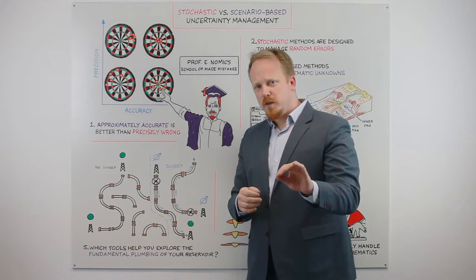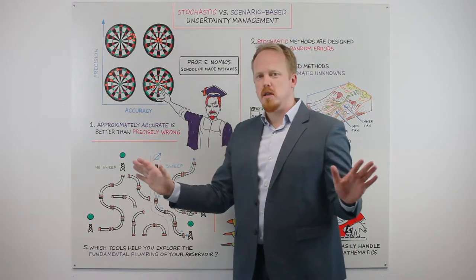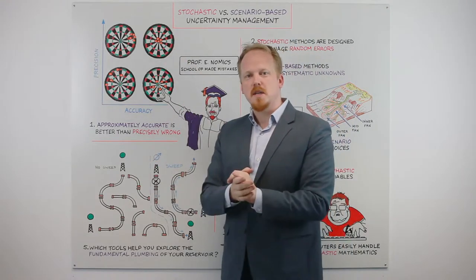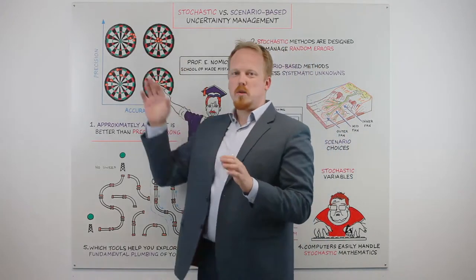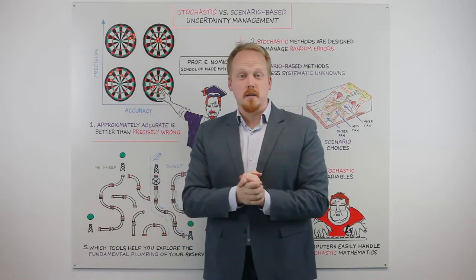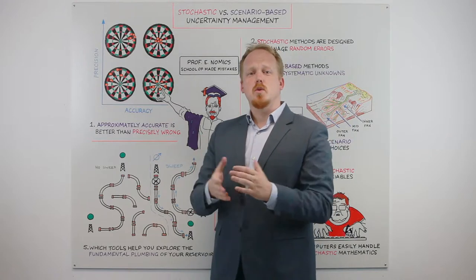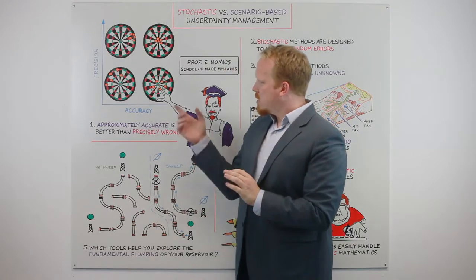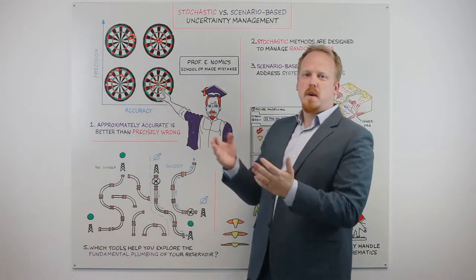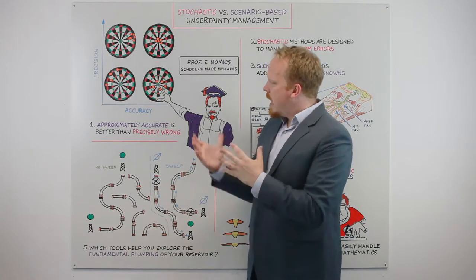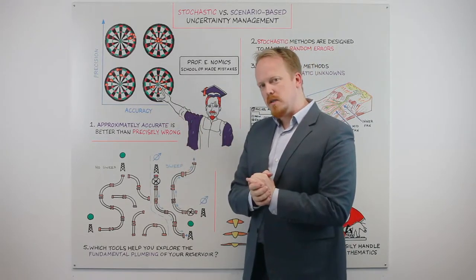In the oilfield we know that precisely accurate is usually unobtainable, but we also know that precisely wrong is where we really get into trouble — at least in terms of economic train wrecks — because we're too unconfident. So approximately accurate is the space that we usually want to be in, and from there we can make some pretty robust business decisions.